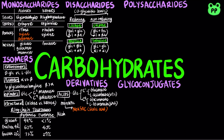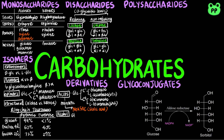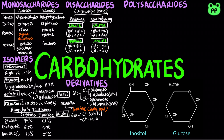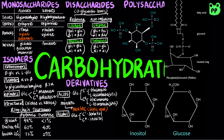Sugar alcohols are formed when the carbonyl group of the monosaccharide becomes hydroxylated. The sugar alcohol of glucose at carbon-1 is known as sorbitol, and is commonly found in artificial sweeteners. The sugar alcohol at carbon-6 is known as inositol. It is a key component of many secondary messengers, such as inositol phosphate, as well as being a component of the membrane, such as phosphatidylinositol.